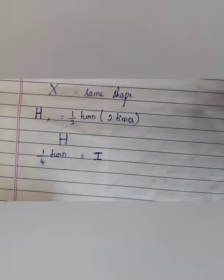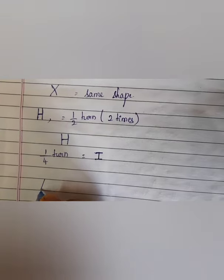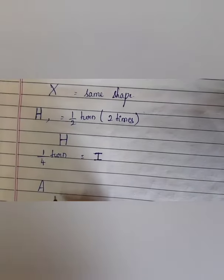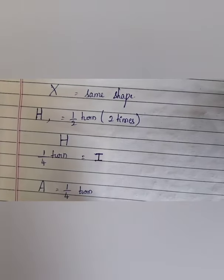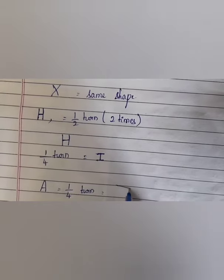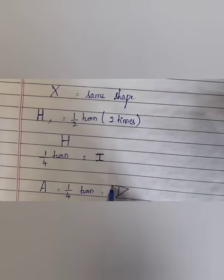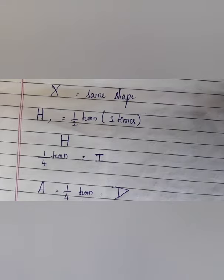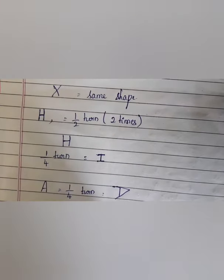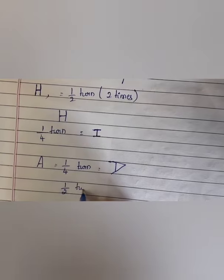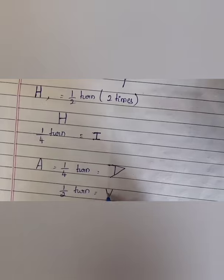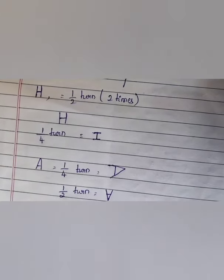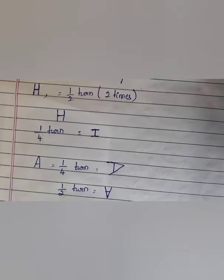Consider the letter A. When A is rotated a 1/4 turn, rotating the figure four times, it looks a certain way. When we rotate A into a half turn (2 times), it looks a different way. This is about the rotation of figures.